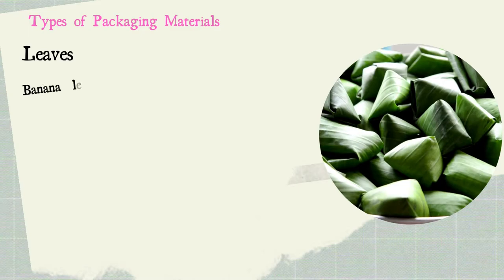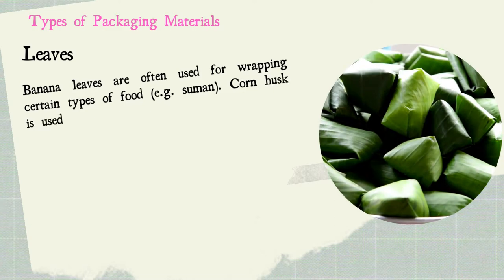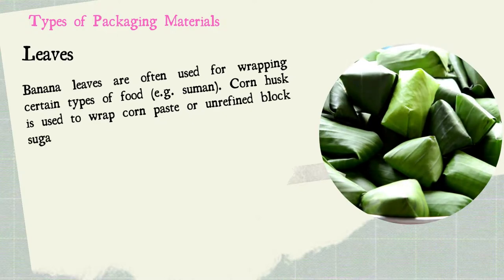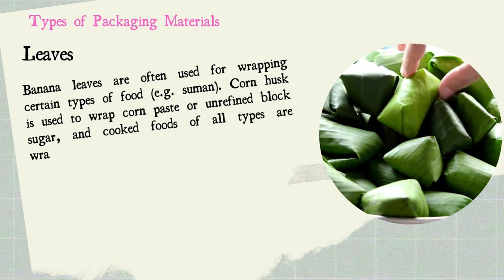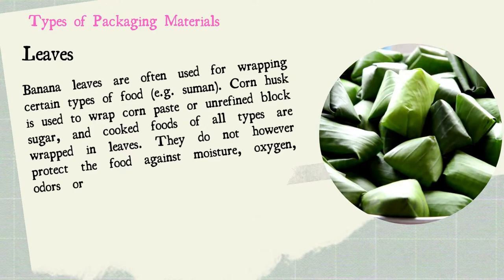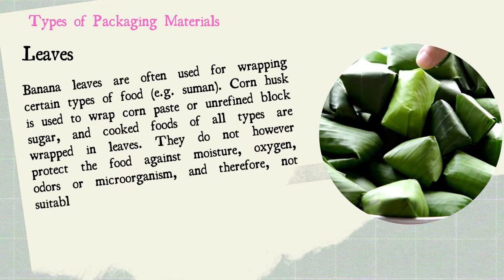Correct packaging prevents any wastage such as leakage or deterioration which may occur during transportation and distribution. In many developing countries, the most commonly used food packaging materials include leaves. Banana leaves are often used for wrapping certain types of food — for example, suman. Cornhusk is used to wrap corn paste or unrefined black sugar, and cooked foods of all types are wrapped in leaves. They do not, however, protect the food against moisture, oxygen, odors, or microorganisms, and are therefore not suitable for long-term storage.